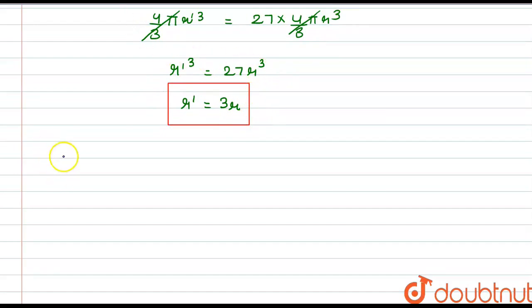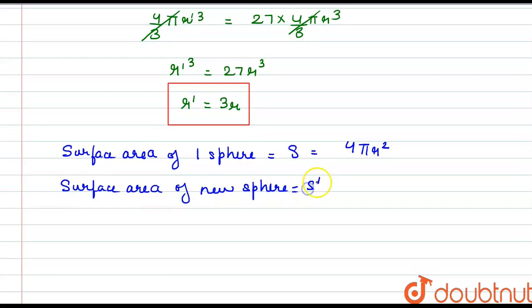Now we are given that the surface area of one sphere, or the old sphere, is S = 4πr². And the surface area of the new sphere is S' = 4πr'². This is the second part of the question.